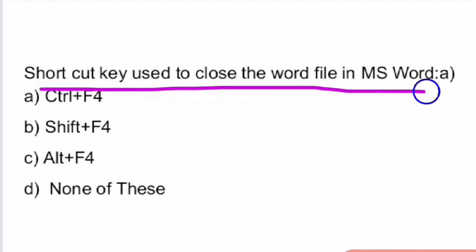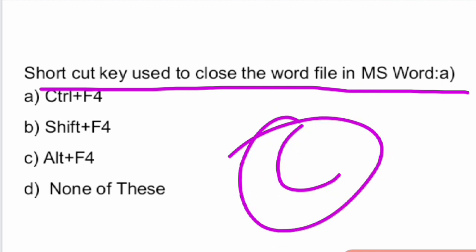Next question: what is the shortcut key used to close the word file in MS Word? The answer is Alt plus F4. Alt plus F4 is the shortcut key for closing the word file. Option C is the right answer.